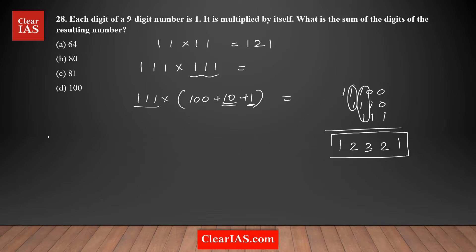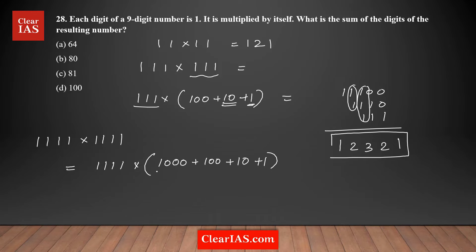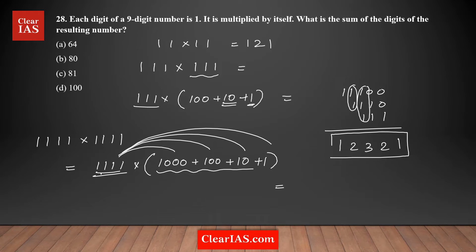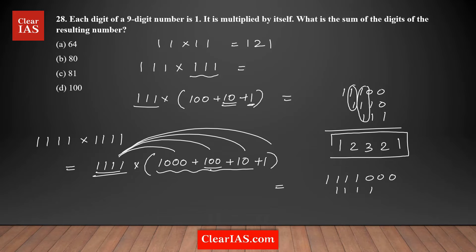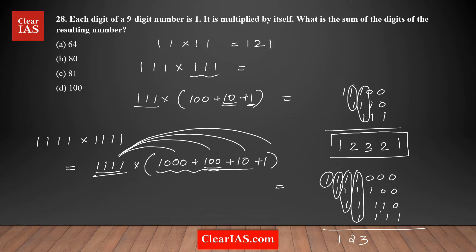Let's do one more example with four digits, each digit being one: 1111 times 1111. I rewrite 1111 as 1000 plus 100 plus 10 plus 1 to simplify multiplication. Multiplying gives rows of four ones shifted by zeros. Adding the columns: one is added once giving 1, twice giving 2, three times giving 3, four times giving 4, then decreasing — 3, 2, 1. The product is 1234321.